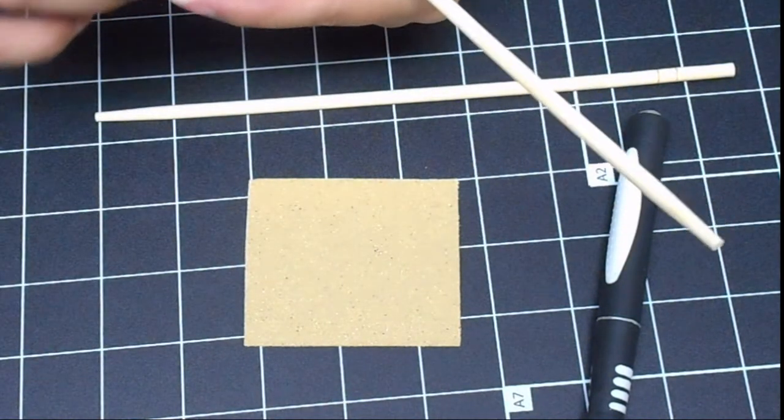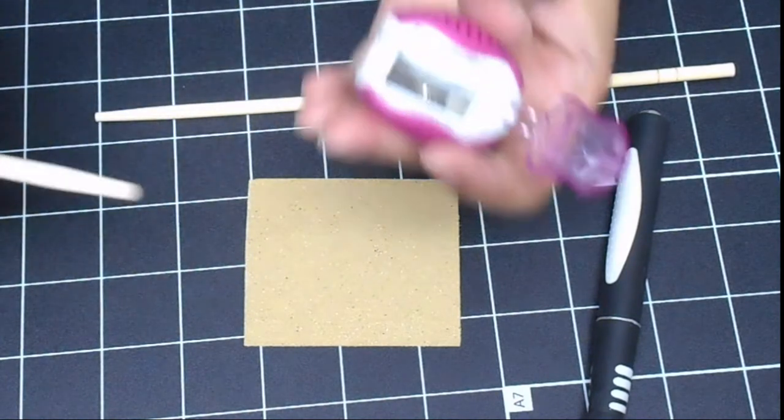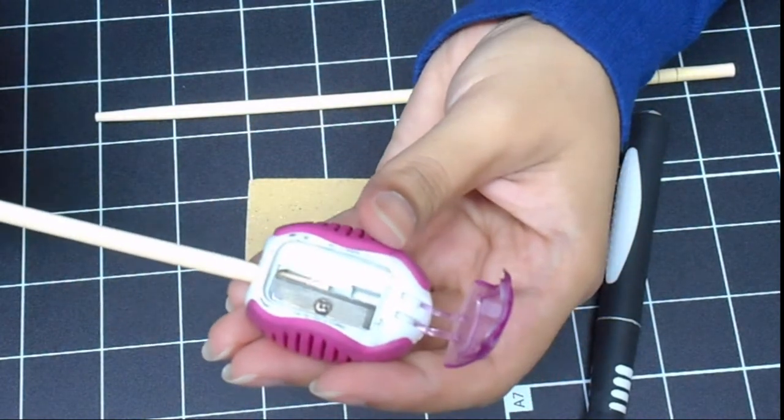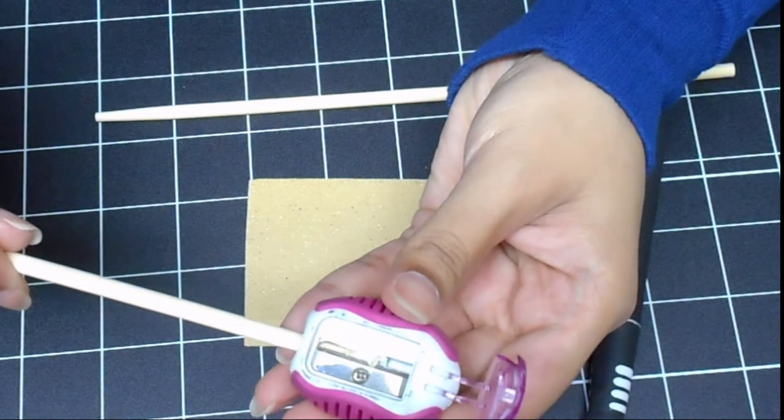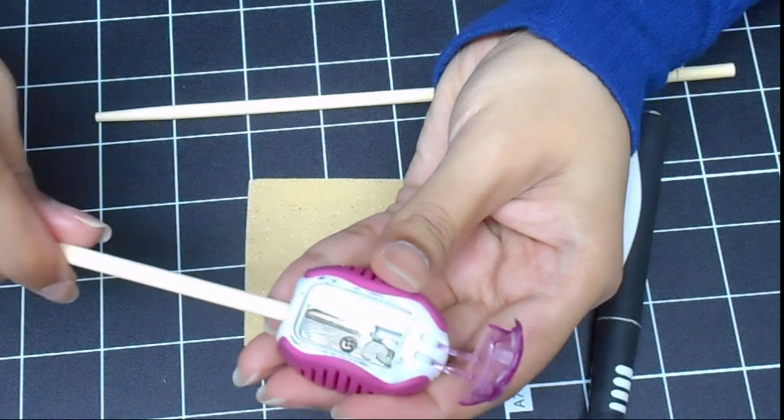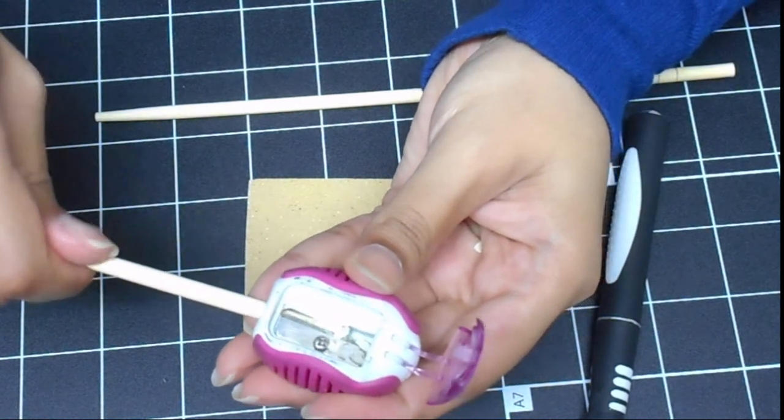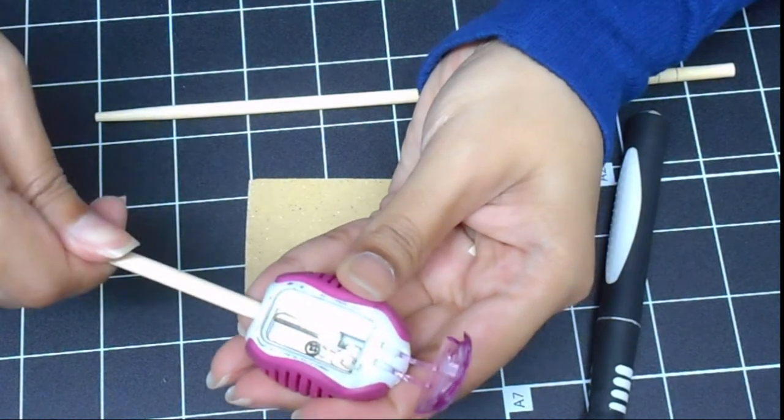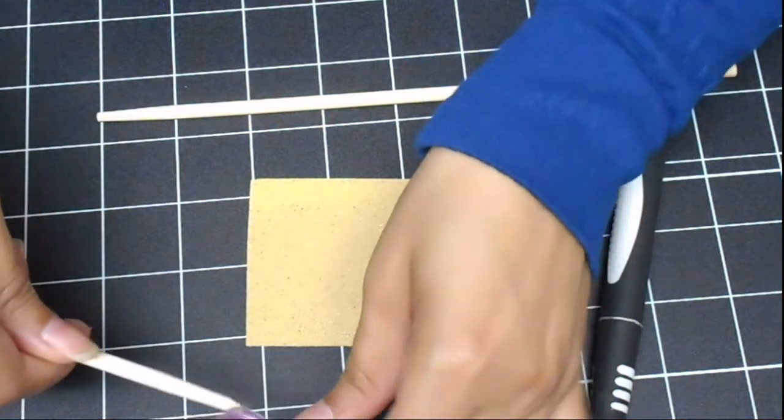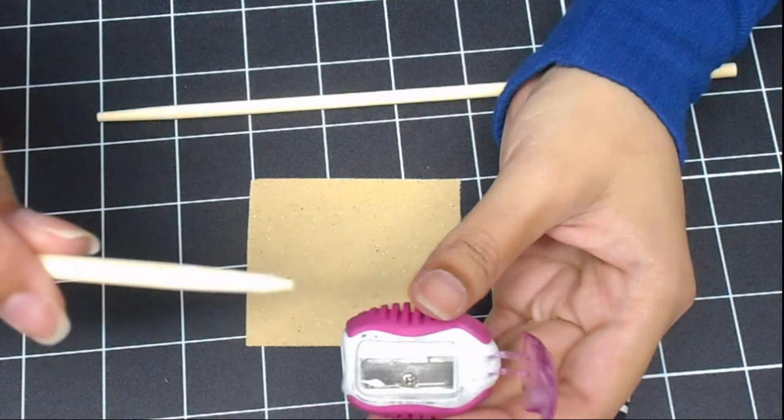So we'll start off by making the chopstick into a fine point. You just keep sharpening till you're happy with the point. As you can see, it's already becoming thinner.